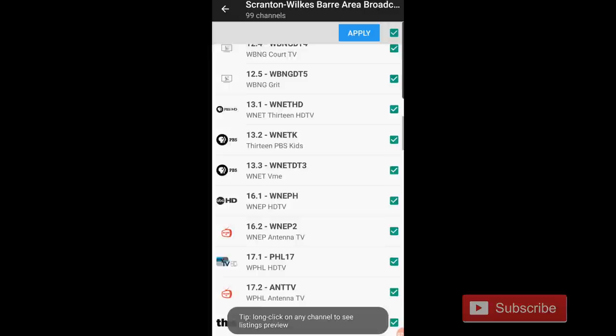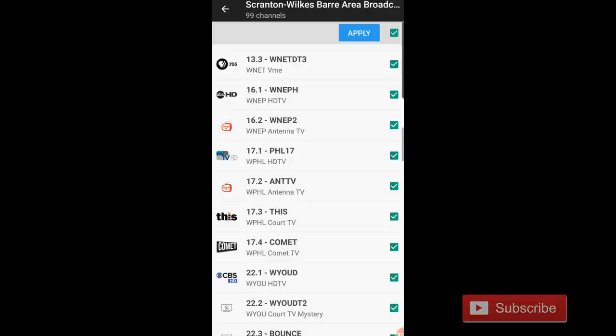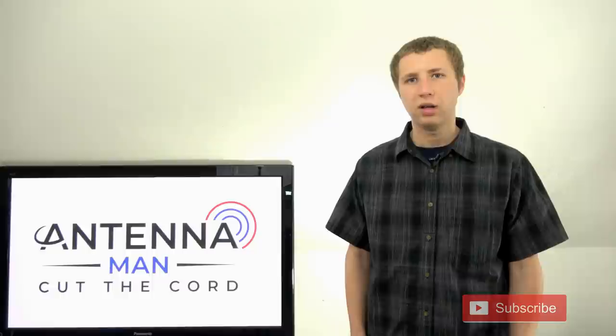It will give me the option to look up Scranton-Wilkes-Barre channels, and then from there, I can see all of those Philadelphia channels, and then the Scranton-Wilkes-Barre stations in addition to that, and then just go through and check which ones you would like to have. Hit apply, and then you have them on your channel list.